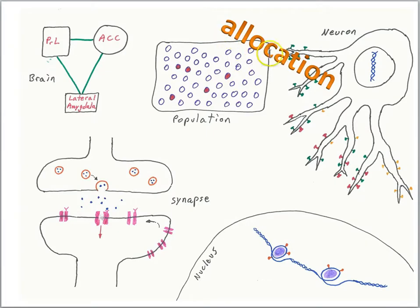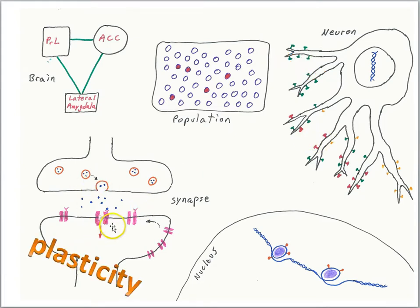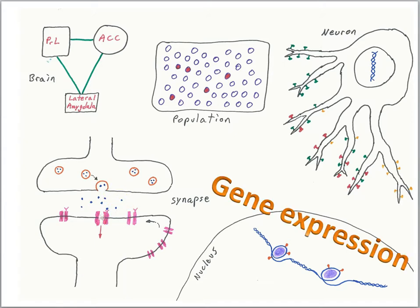We have an allocation process in terms of which cells will become part of the memory engram, but also for each cell, which synapses are involved in the memory. We know that synapses undergo plasticity — changes in the strengths of the connection — and that we called LTP. The late phase of LTP required gene expression to make protein products that make lasting changes at synapses.